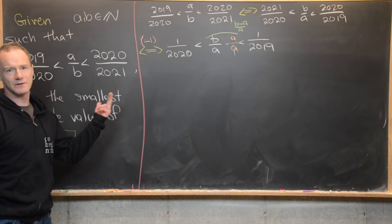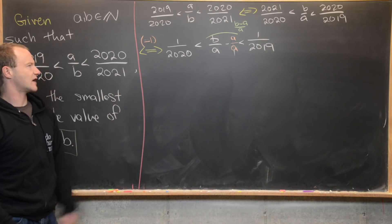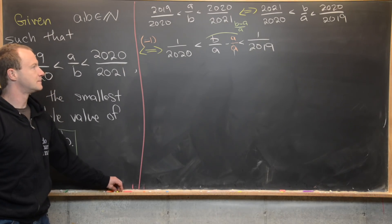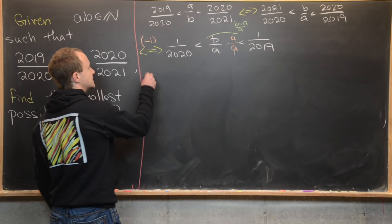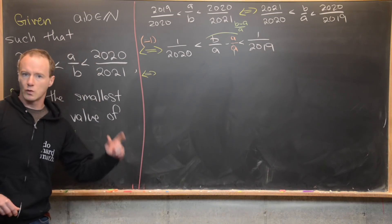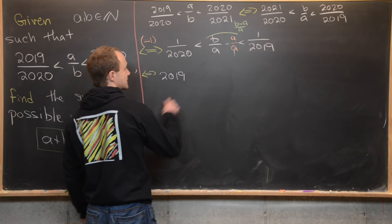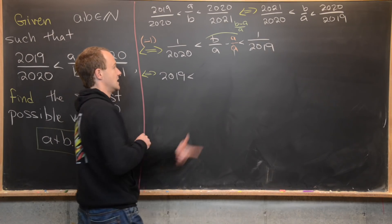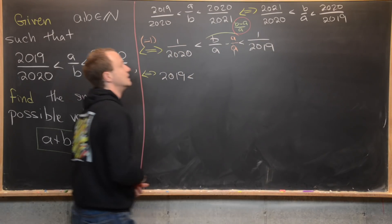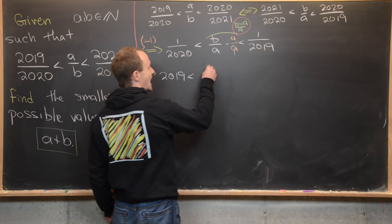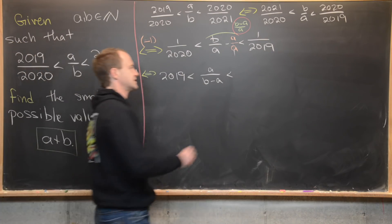We can simplify further. The left and right parts are 1/2020 and 1/2019. If we take the reciprocal again — remembering this flips the inequality — we get only whole numbers: 2019 < a/(b − a) < 2020.